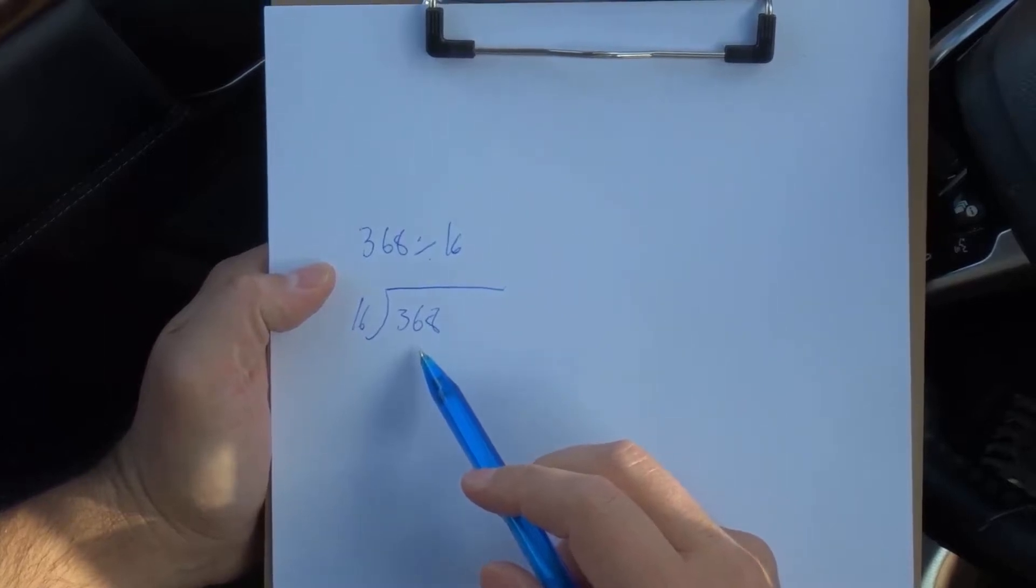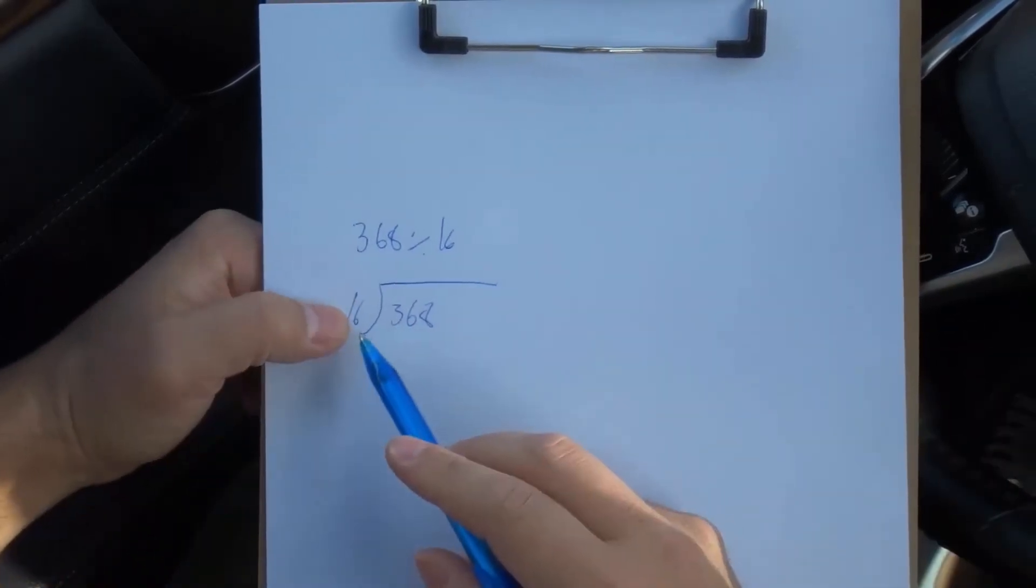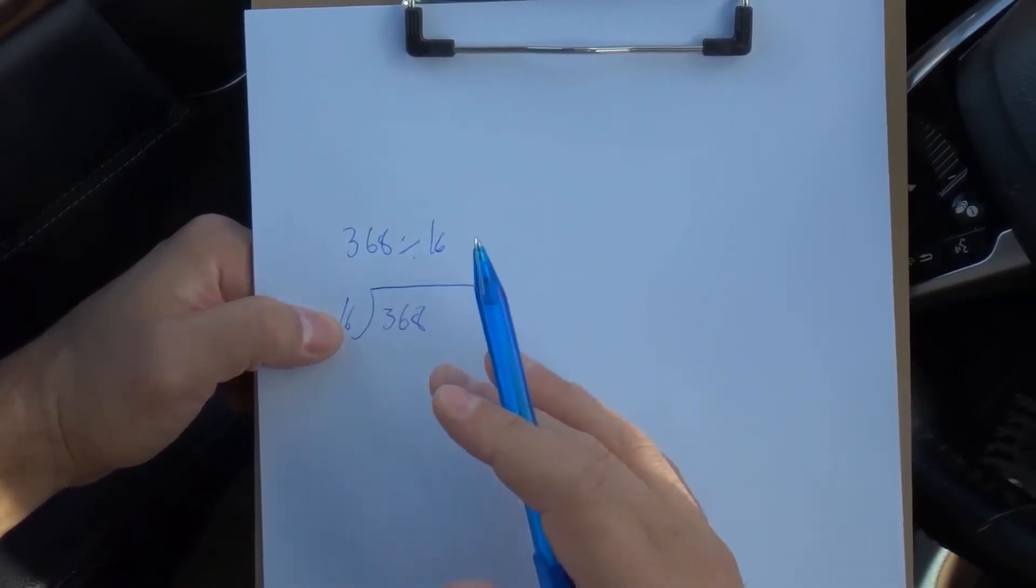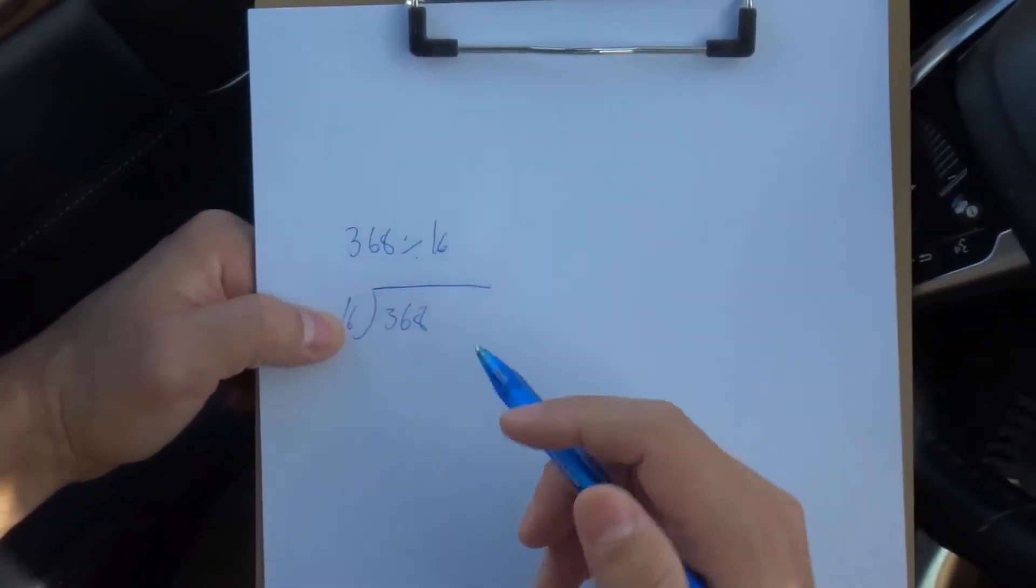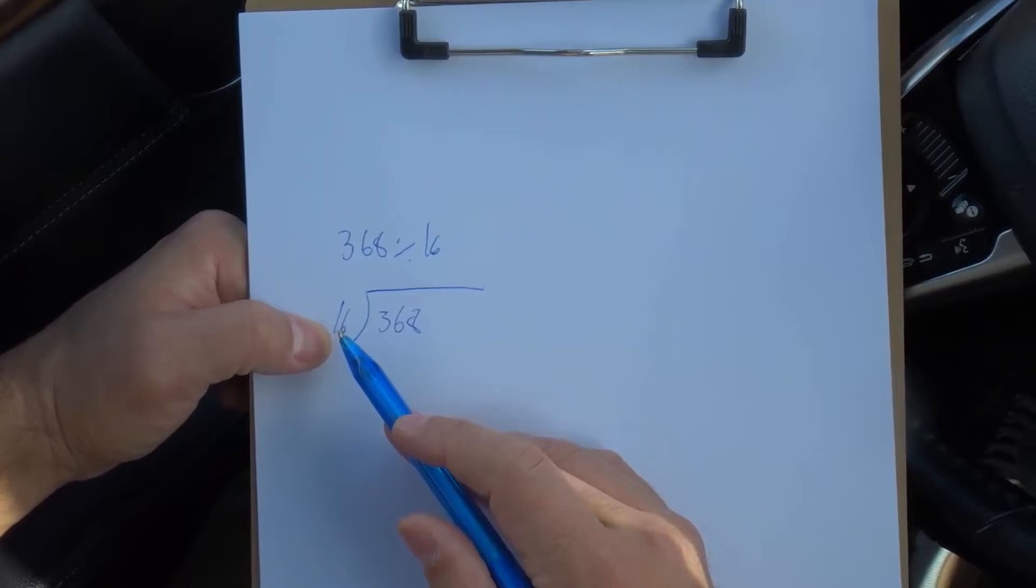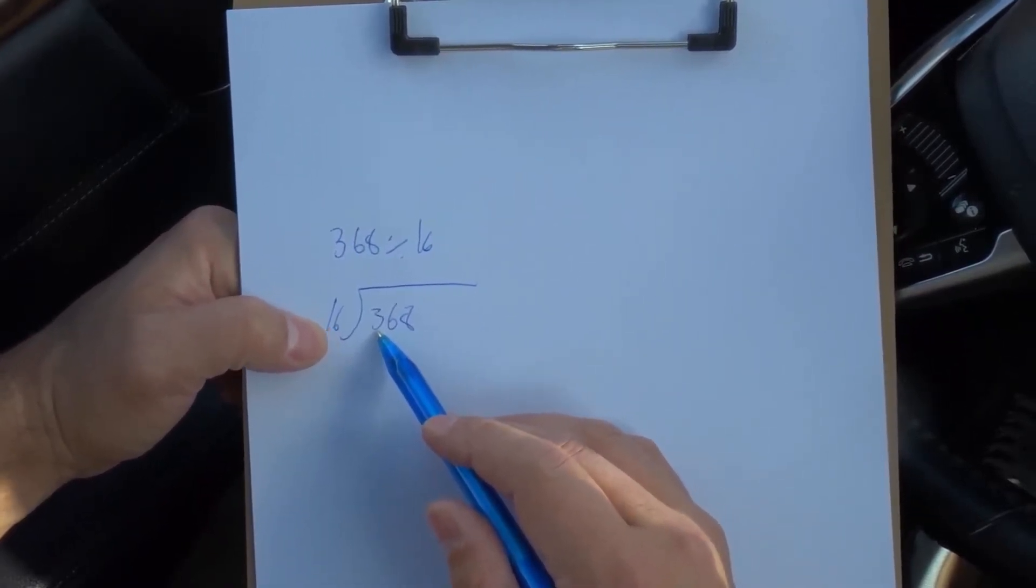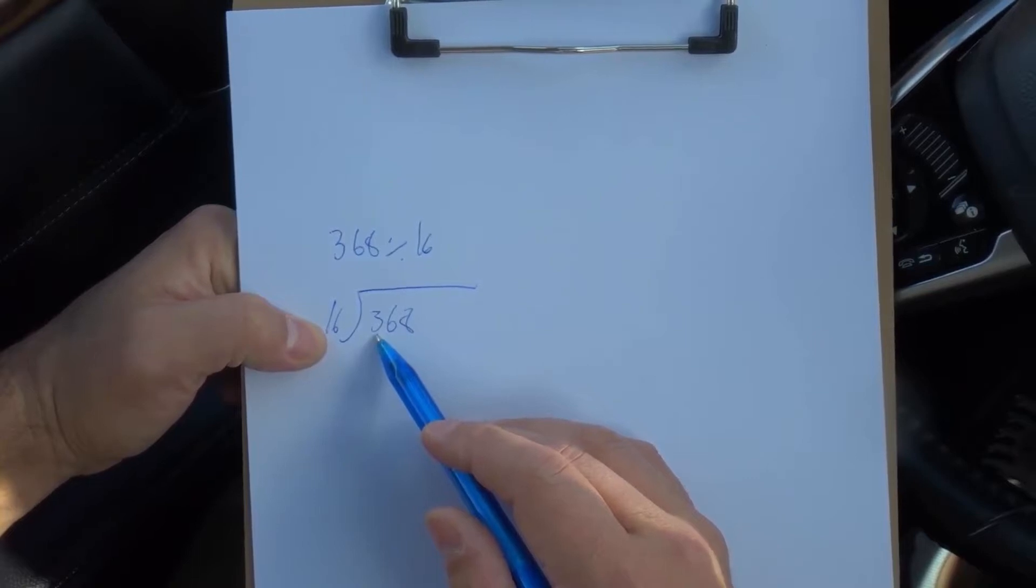So now that we have this, we need to start by taking the equation and working from left to right. We got to figure out how many times this smaller number can go into this number. So start with the left number, 3 over here. Can 16 go into 3? 16 times 1 is already 16, which is higher than 3. So that's not going to work. We're already too high.